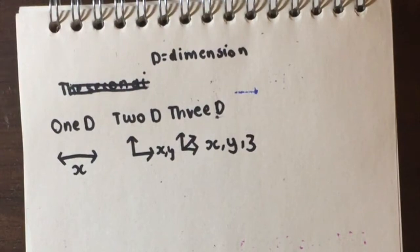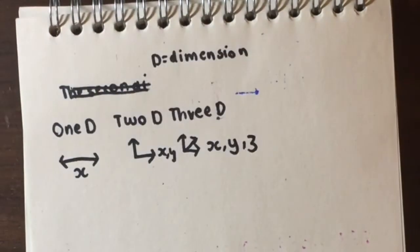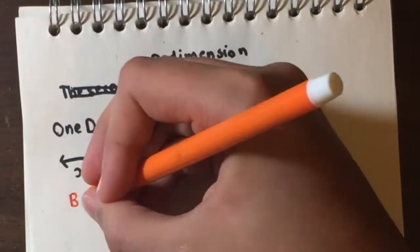When a substance is three-dimensional, it has depth, length and height, which is x, y and z-axis.